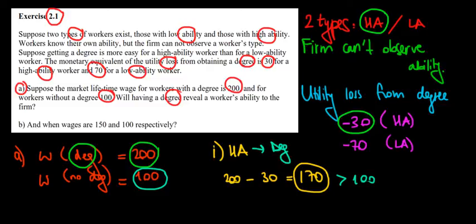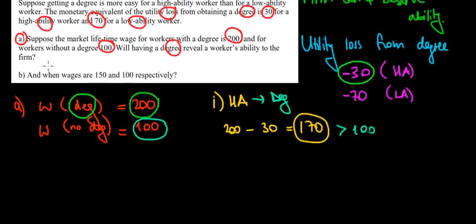Now let's compare this to the low ability worker. What does the low ability worker do? Let's do the same math. For a low ability worker, is he going to get the degree? The wage of the degree is 200 dollars, but for the low ability worker, he must incur a loss of 70 dollars.